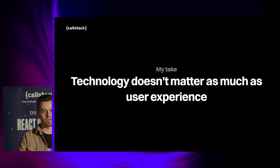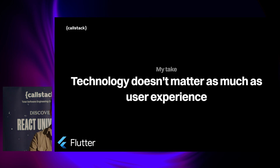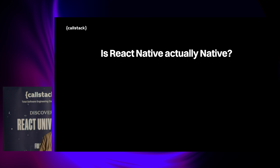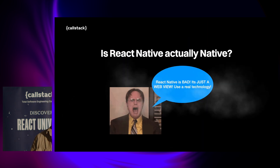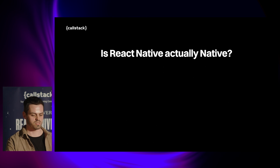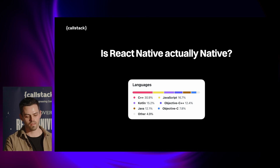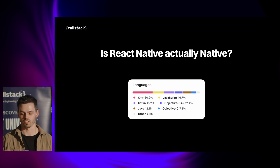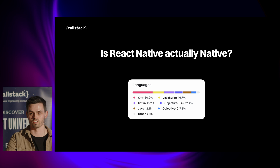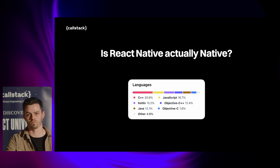My take is that the technology doesn't matter as much as the user experience we offer — maybe except for frameworks that don't render native views at all. Is React Native actually native? Even though some users on Twitter say it's not because they read some blog posts, it's actually native. It's built using C++, Kotlin, Java, and Objective-C, with some Swift in the codebase. And it renders the same native views that a UIKit app would on iOS, and an Android app would underneath.